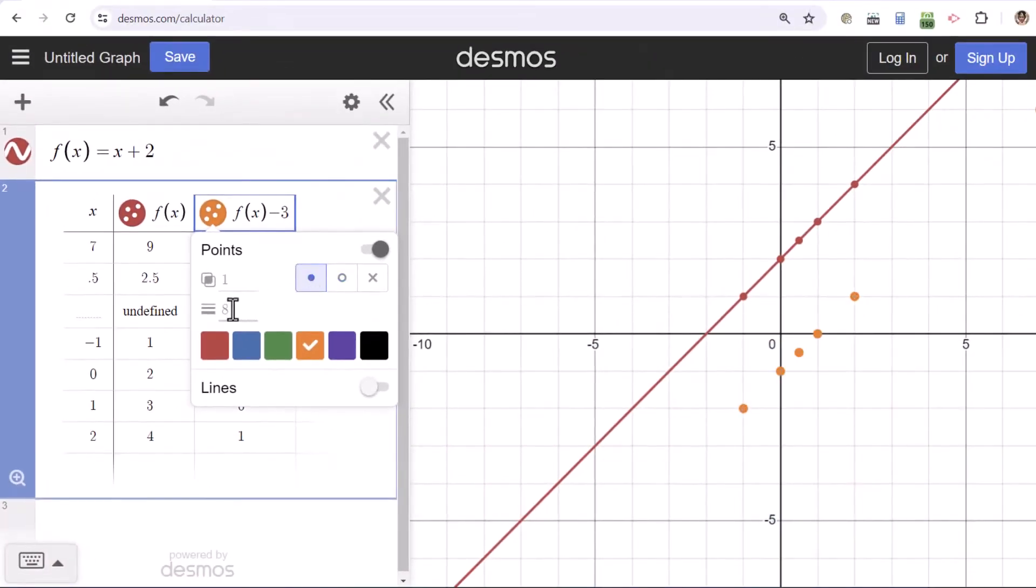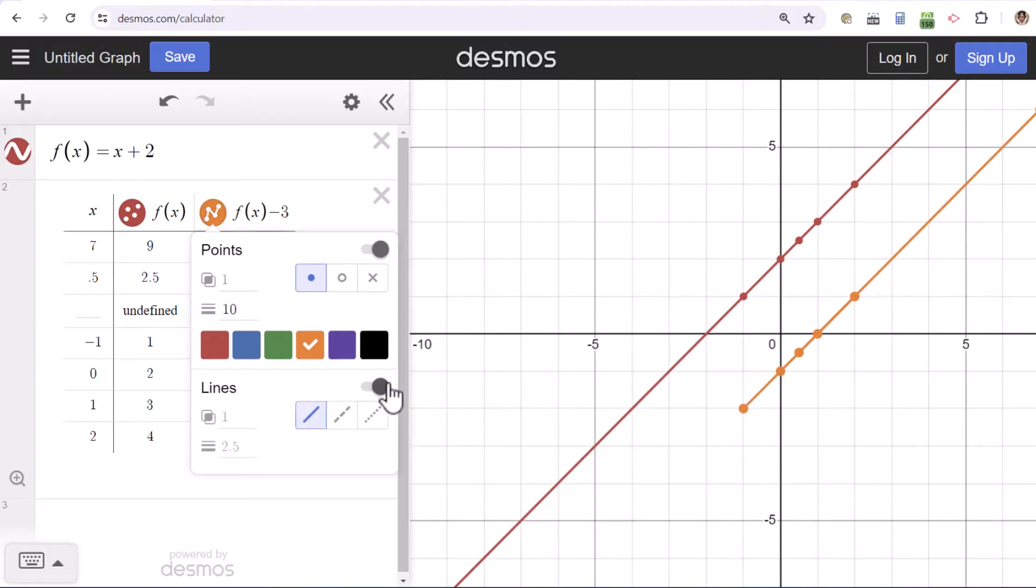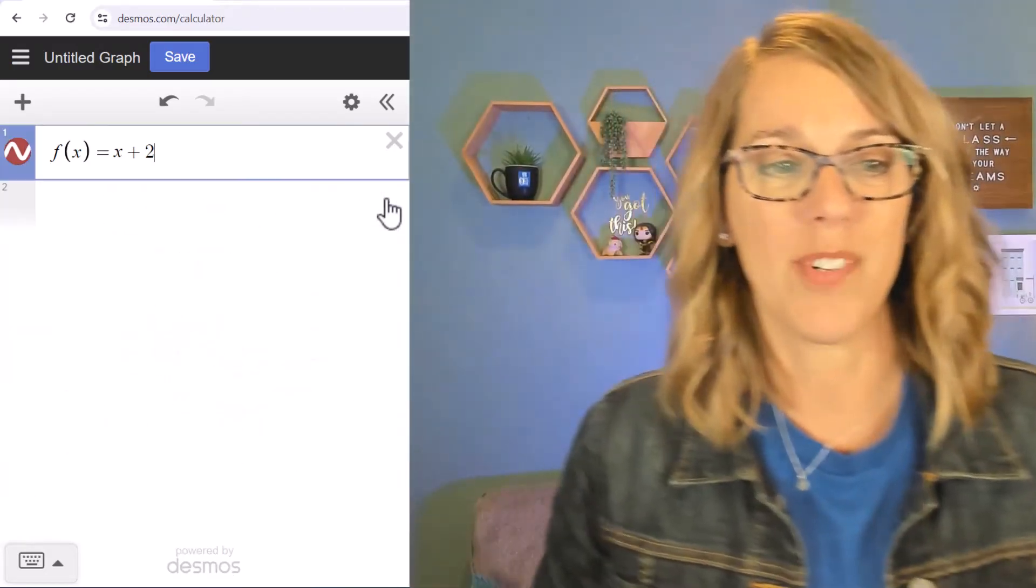You can change it to a different symbol. I don't know why you wouldn't want just the points. You can make your points bigger. So let's say that I want them to be 10 instead and I can even connect the dots with a line there. So lots and lots of options there.